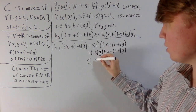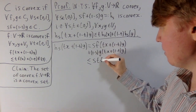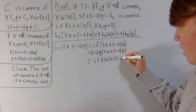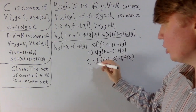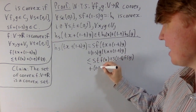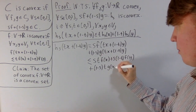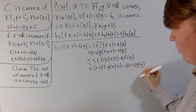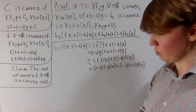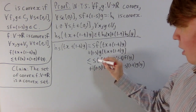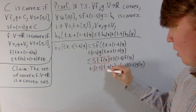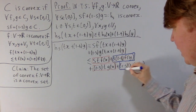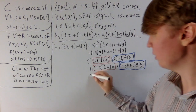Applying the convexity inequalities gives us: s·t·f(x) + s·(1−t)·f(y) + (1−s)·t·g(x) + (1−s)·(1−t)·g(y). This is a bit of a mess, but we can group terms. The first and third terms both have a factor of t, and the second and fourth both have a factor of (1−t). Factoring out t from the first pair and (1−t) from the second pair puts this in a useful form.